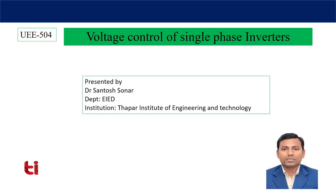Today I am going to discuss voltage control of single phase inverters. Last class I discussed the 120V conduction mode of three phase inverter, where we saw that even harmonics and triplen harmonics are absent in the output voltage. There are other methods to reduce harmonics further to get better output voltage quality, and we also need to control the output voltage magnitude by controlling the width of the switching pulses.